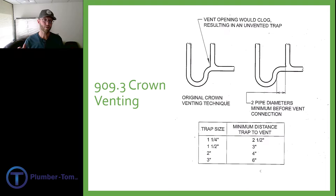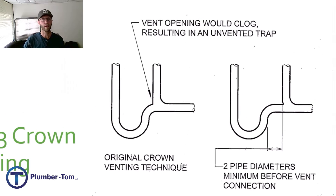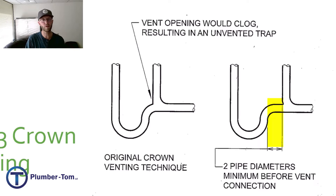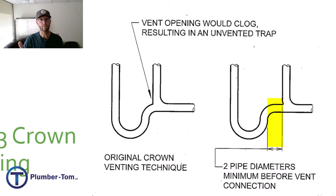Section 909.3 talks about crown venting. A crown vent is when you have a vent that comes right after the trap. If it's too close to the trap, that vent can actually get plugged by the fluids and material coming through the drain. For that reason, when we're crown venting — and it is still allowed — you have to be two times the pipe diameter downstream. That's still not very far: if you have an inch-and-a-half trap, that's only three inches downstream. This applies any time you're hooking up a trap in a cabinet under the sink — maybe you're going to do an auto vent. Make sure that you're downstream far enough for those vent connections.